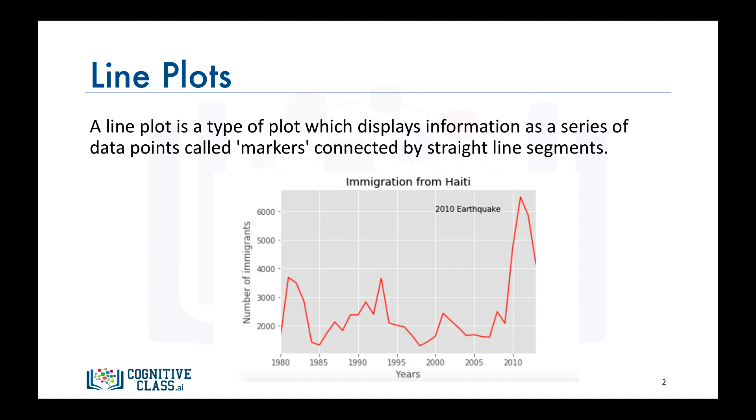Based on this line plot, we can then research for justifications of obvious anomalies or changes. So in this example, we see that there is a spike of immigration from Haiti to Canada in 2010. A quick Google search for major events in Haiti in 2010 would return the tragic earthquake that took place in 2010. And therefore, this influx of immigration to Canada was mainly due to that tragic earthquake.